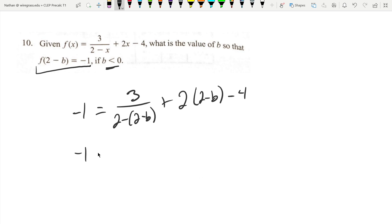I'm going to simplify this statement down a little bit. We get on bottom here just b, and then we get 4 minus 2b minus 4. Of course, those cancel.